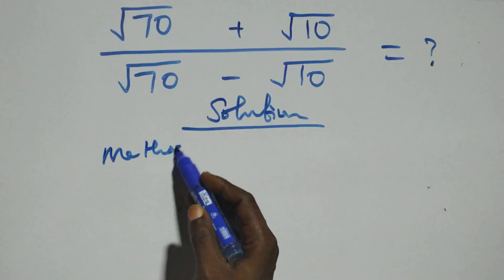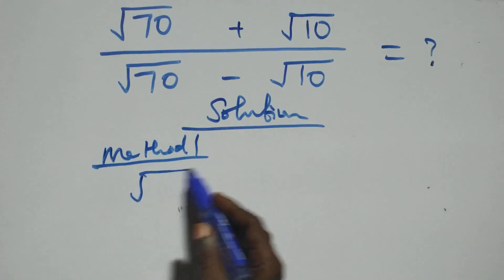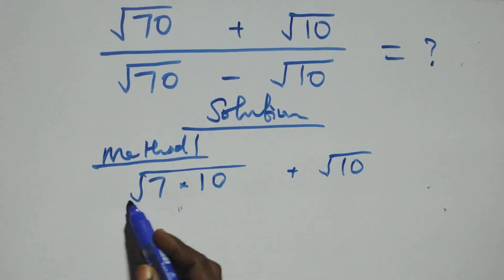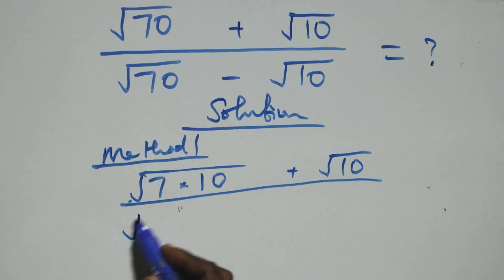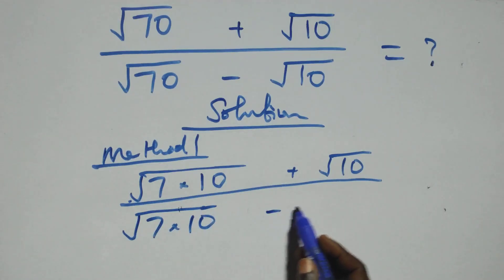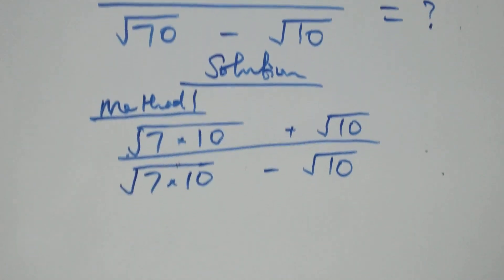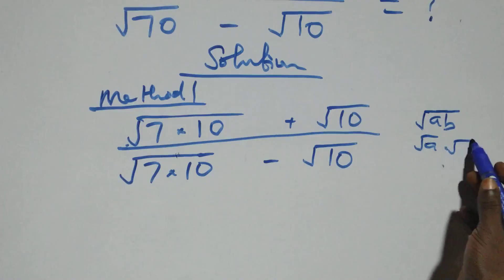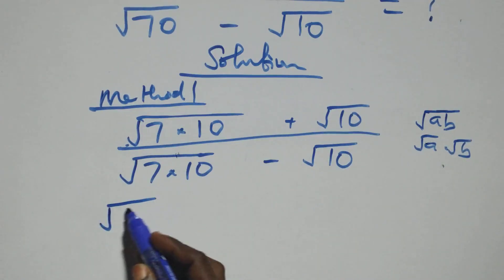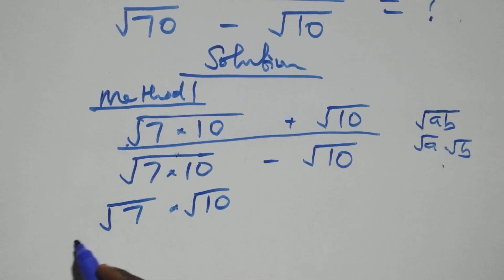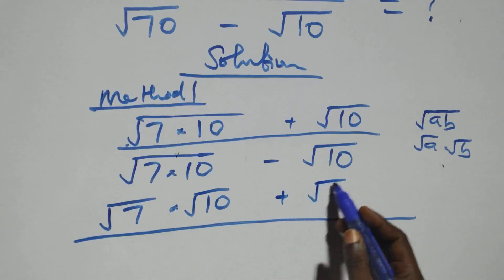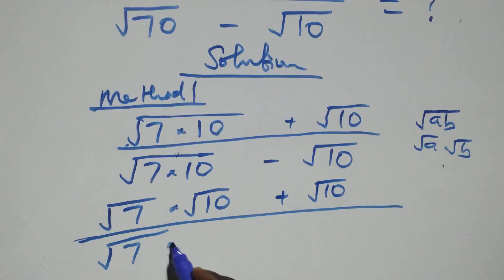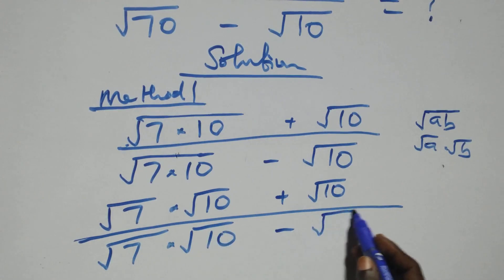The first method: we can rewrite all we have, and this becomes √7·√10 plus √10, divided by √7·√10 minus √10. This follows when we have √(a·b), which we can write as √a times √b. So we separate this and have √7·√10 over, plus √10 here first, then divided by √7·√10 minus √10.